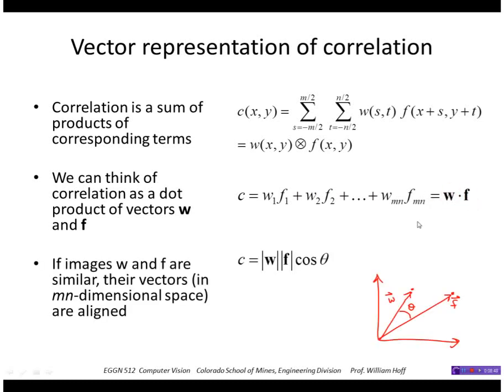So the dot product, of course, can be written like this. It's the magnitude of w times the magnitude of f times the cosine of the angle between them. So if those vectors are aligned, if theta is zero, then the score will be high.